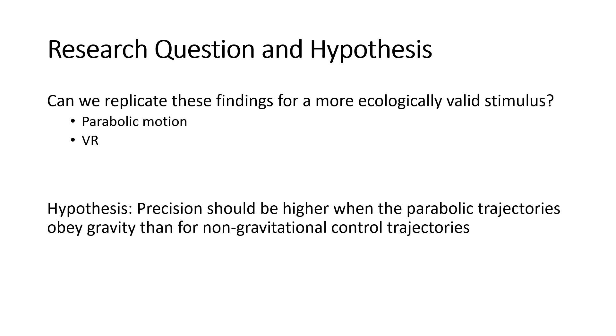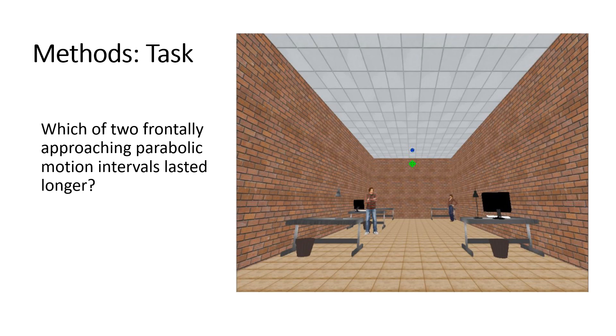So to get everyone on the same page, again, our hypothesis was that precision should be higher when motion is earth gravity conformant or concordant than for control motions that do not obey earth gravity. So about our experiment, about the methods,